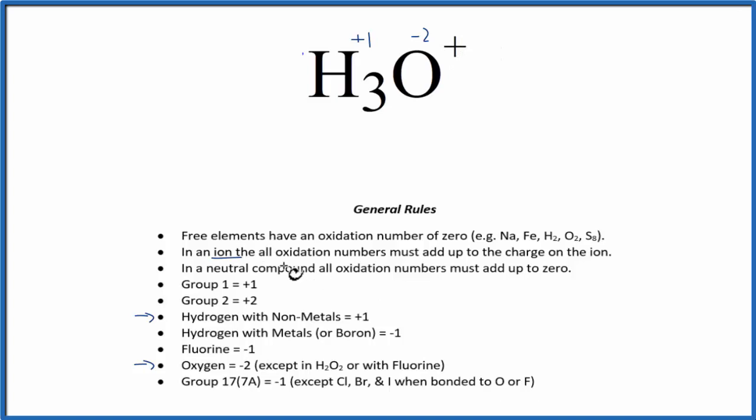we have this positive charge on the ion here. All the oxidation numbers need to add up to the charge of the ion, this positive plus one. So we can check that: plus one, and then we have three hydrogens, minus the two for the oxygen—plus three minus two—that equals plus one.